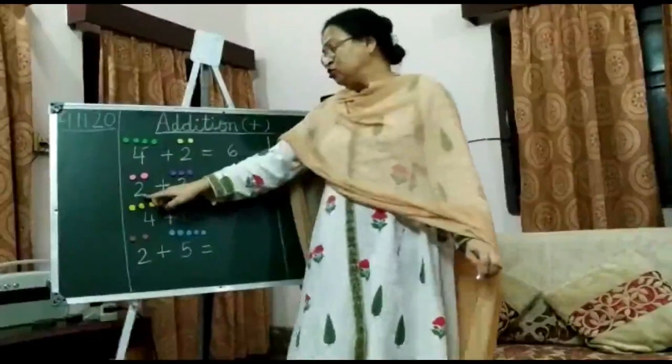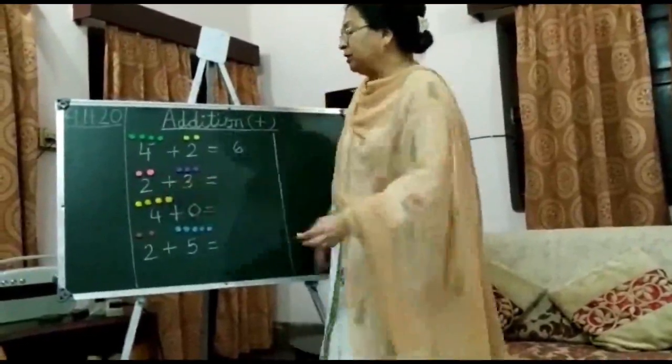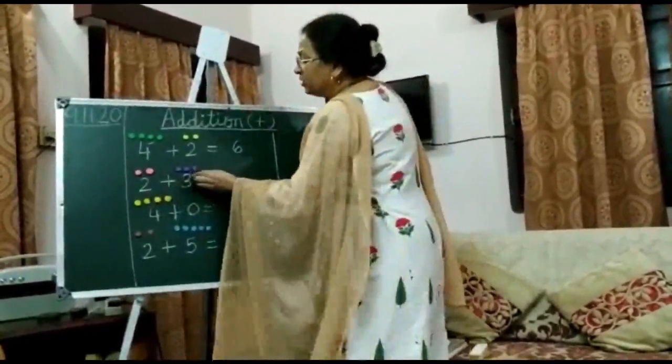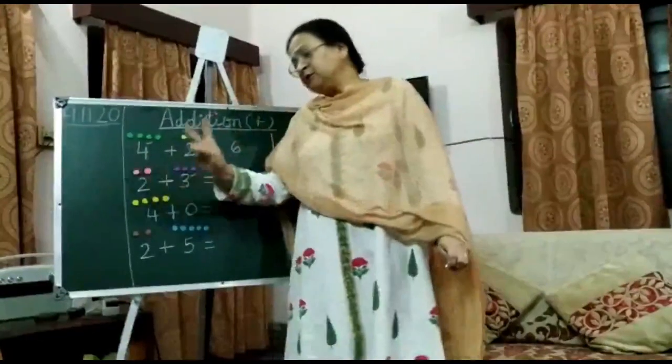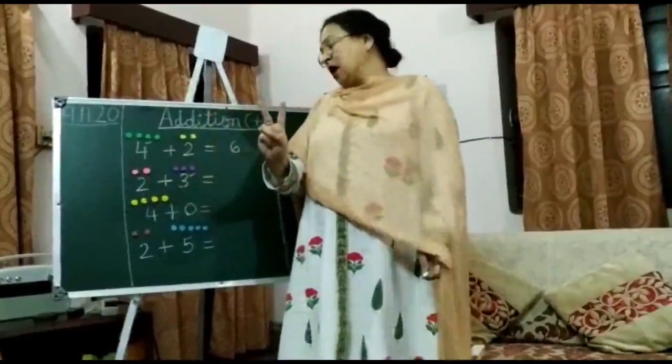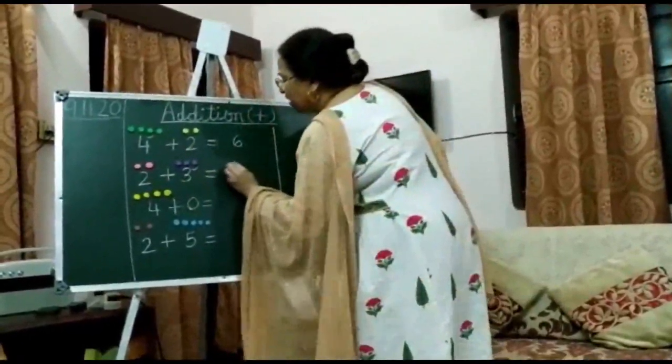Next sum is 2 plus 3. The big number is 3. We put a tick here, lock it in our mind, and take out the smaller number on our fingers. After 3: 4, 5. So the answer is 5.